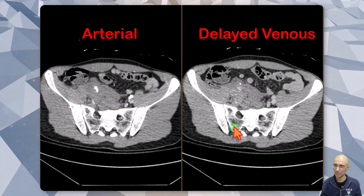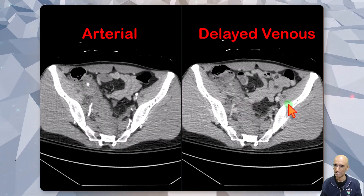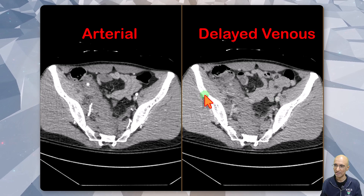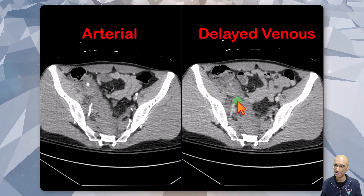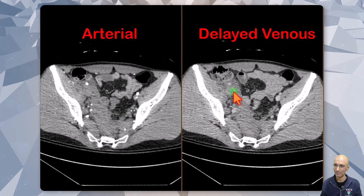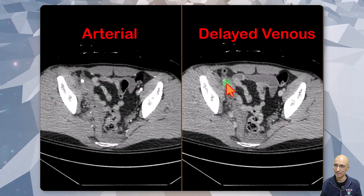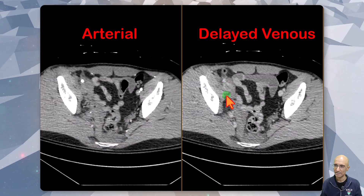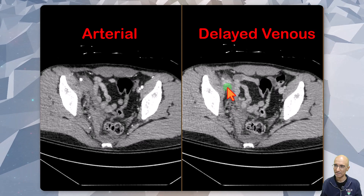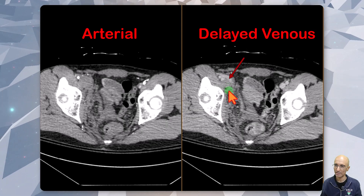As I keep scrolling down further on the delayed venous phase, we can see the normal left external iliac vein but no right external iliac vein is identified. We can see a filling defect in the right external iliac vein which extends into the distended right common femoral vein.